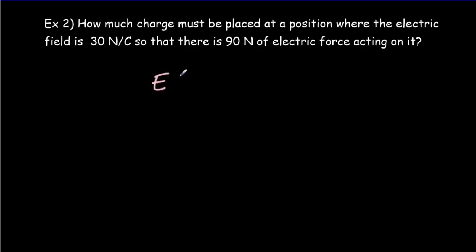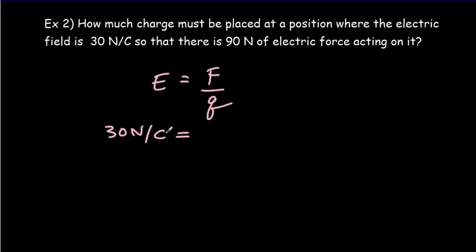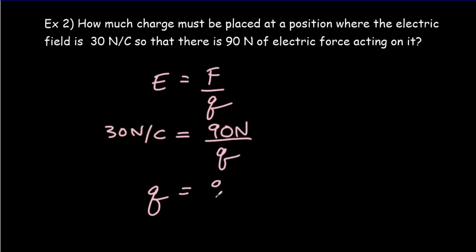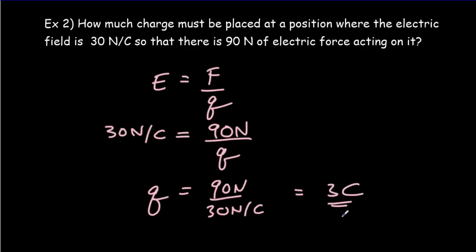The electric field is the electric force acting per unit charge. In this case, our electric field is 30 newtons per coulomb and it's causing a force of 90 newtons on a certain charge. So the charge must equal 90 newtons divided by 30 newtons per coulomb, which equals 3 coulombs.